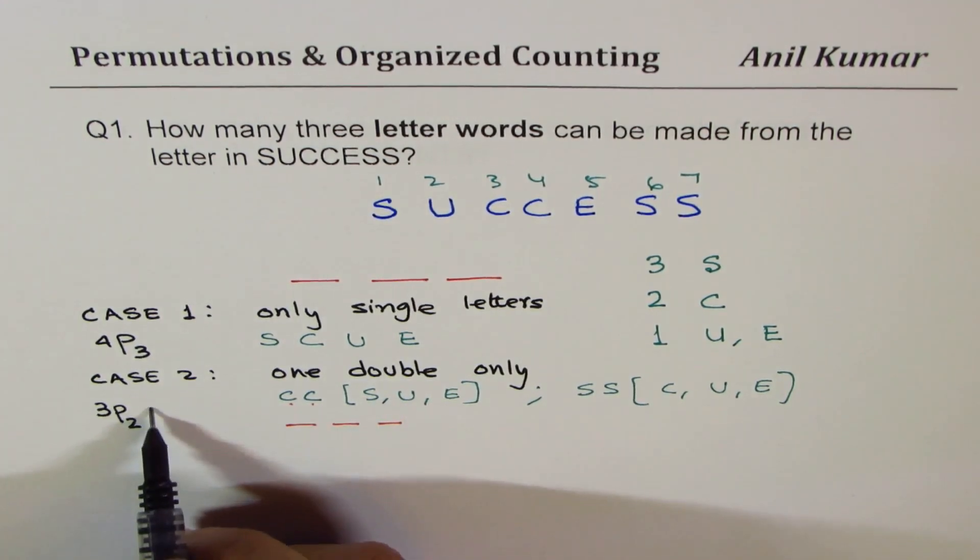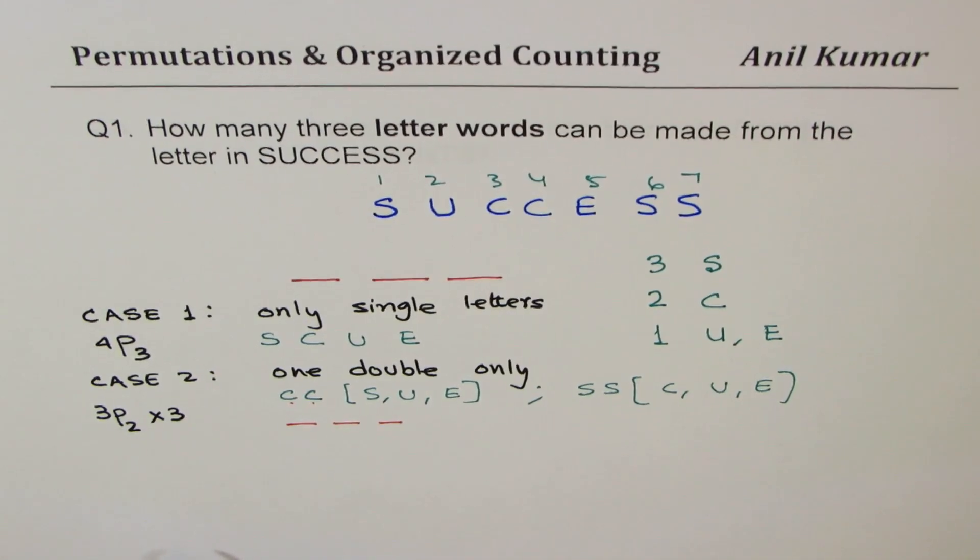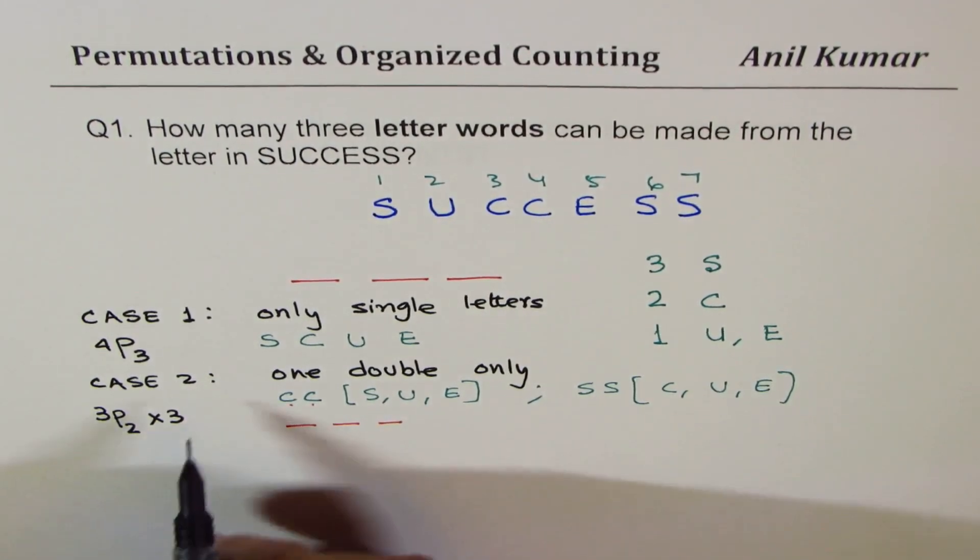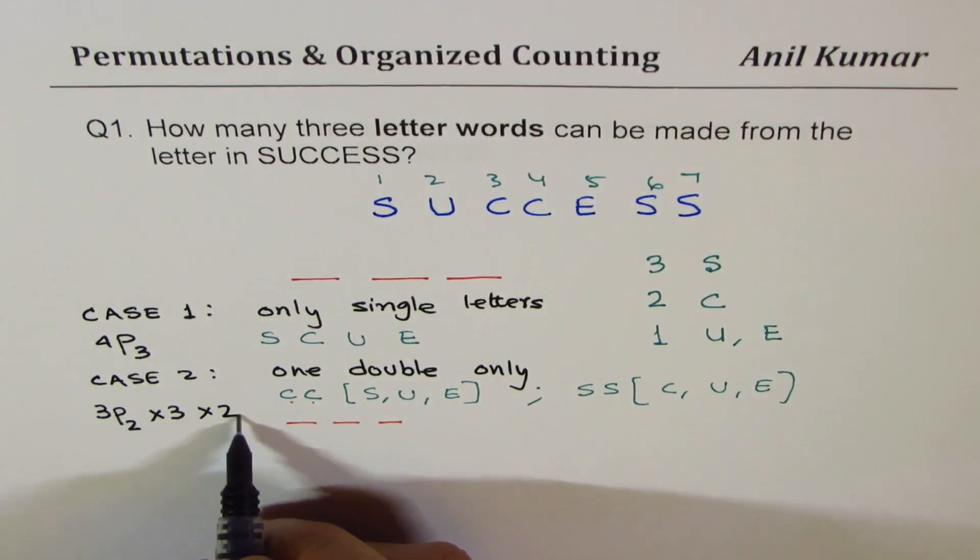Two C's can be filled in. Now once you fill in two C's, then one of these three can get in, so those are three different ways, so I'll multiply that by three. And now we could have double with S also, so times two. Does it make sense to you?